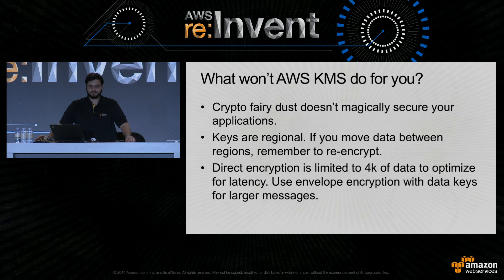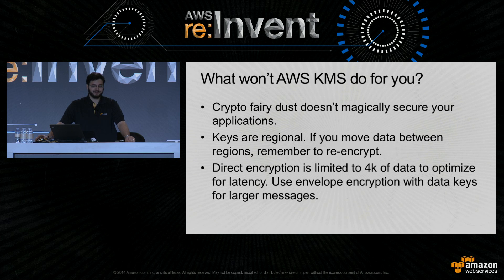It's important to realize there are things KMS won't do for you — you can't sprinkle crypto fairy dust on your applications and magically render them secure. Keys in the Key Management Service are regional resources and do not leave the region in which they were created. If you're backing up encrypted data, you'll want to re-encrypt the envelope key to the target region. Direct encryption using KMS is also limited to 4KB of data to optimize for latency — the normal use case is to encrypt AES keys using envelope encryption.